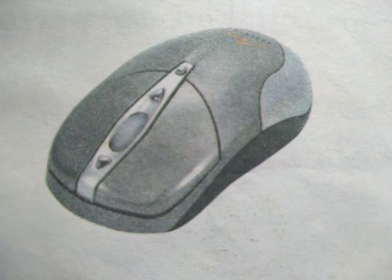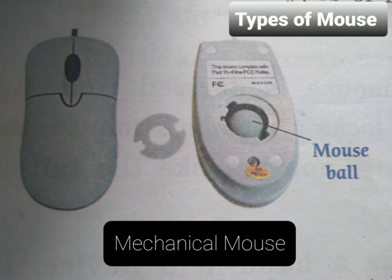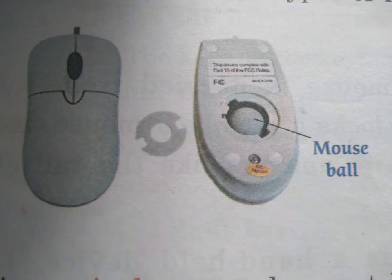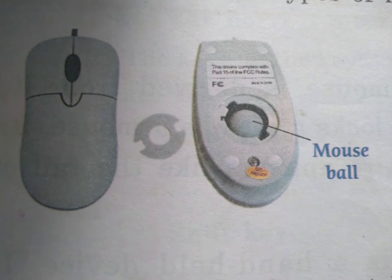That's all for today. Now let's summarize the topic which we have discussed today. We have discussed about types of mouse. There are three types of mouse discussed in your textbook: mechanical mouse, optical mouse, and cordless mouse.